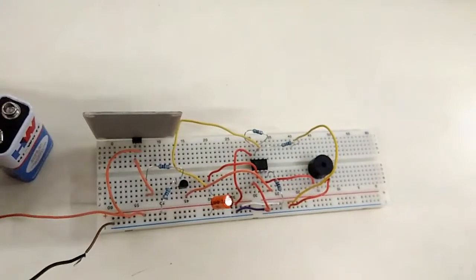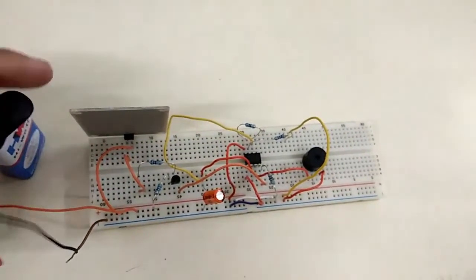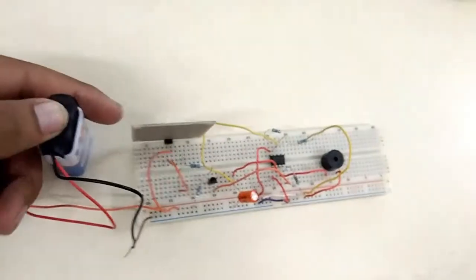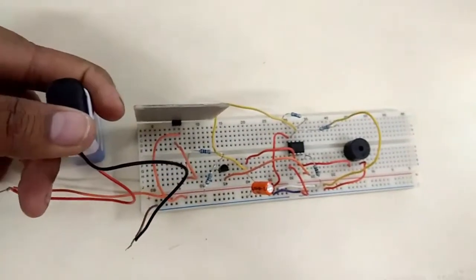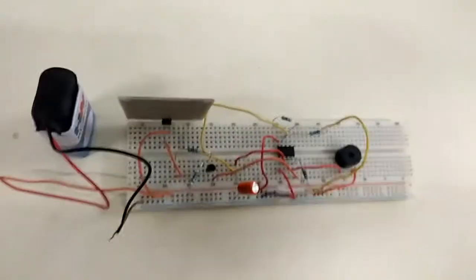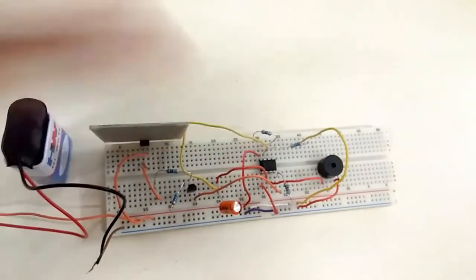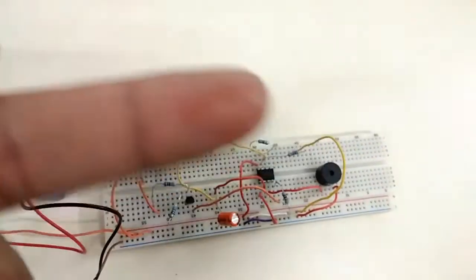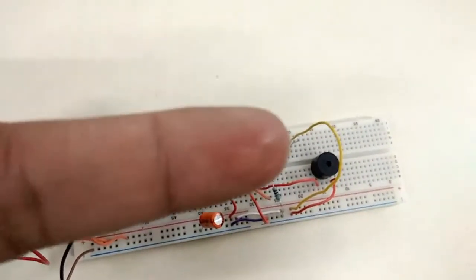The output of the rainfall detector is linked with the base of the transistor with a 100 kilo ohm resistor. Now my finger is dry, so now it is soaked in water and now it is wet.